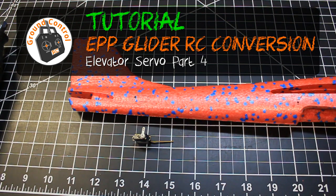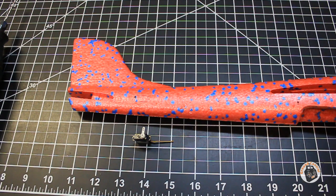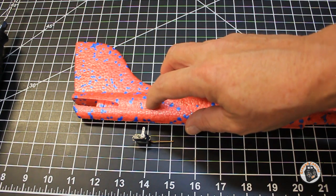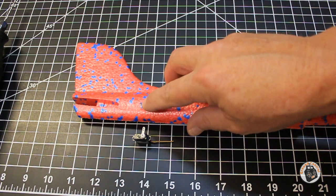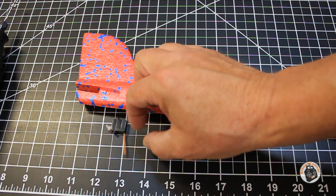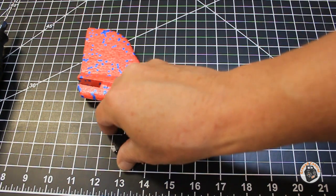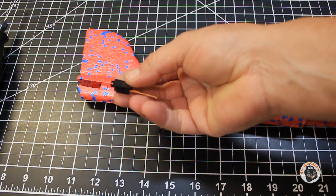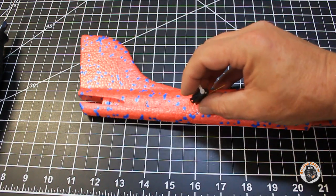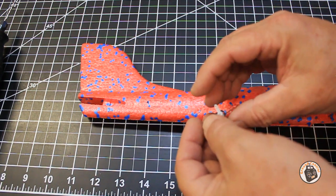We're ready for part three now on the fuselage, and what we're going to be doing is carving out a part of the tail section for our micro servo. You can see just how tiny these things are, and they're very thin, which is one reason why I chose them.